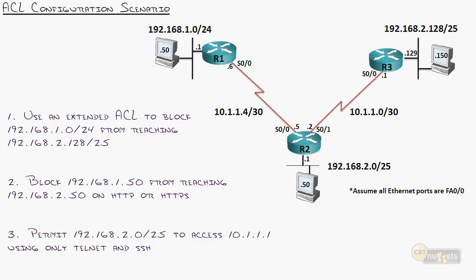Number two: block 192.168.1.50 from reaching 192.168.2.50 using HTTP or HTTPS. We'll pretend this destination is a web server using those protocols. Now is a good time to talk about common port numbers, which I was holding back on.